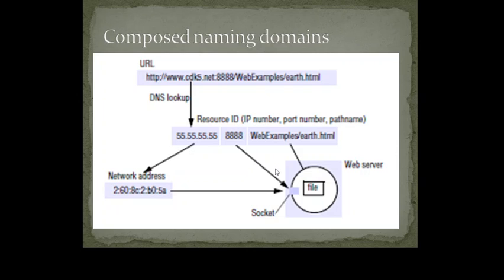If you want to compose names — for example, if you have a domain name along with some more information — for recognizing a host on a network, just a domain name will be enough. You give something like cdks.net to that particular host. However, along with this, you can give more information: after the domain name you get something like a port number and a path name.